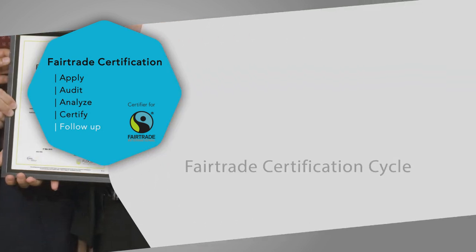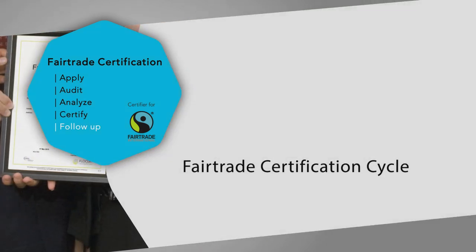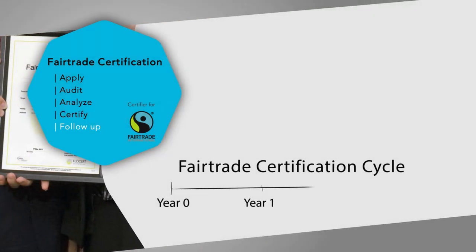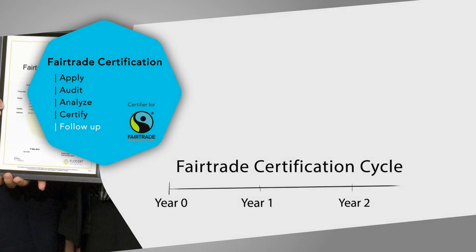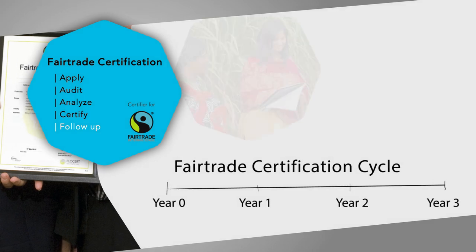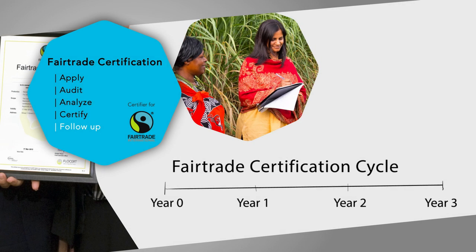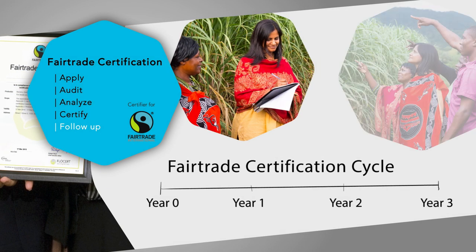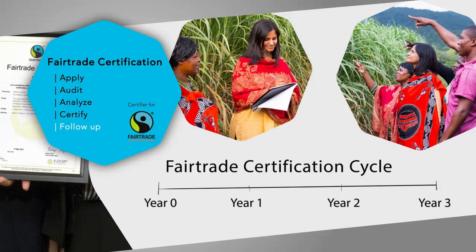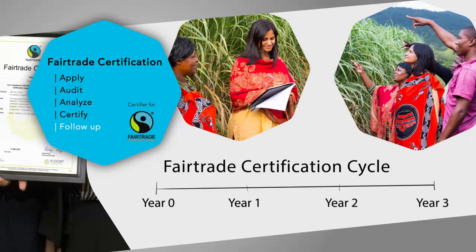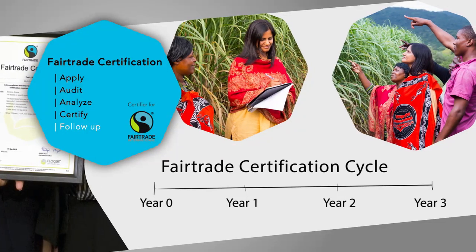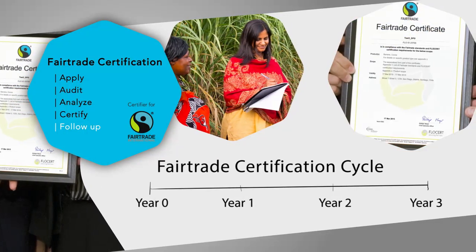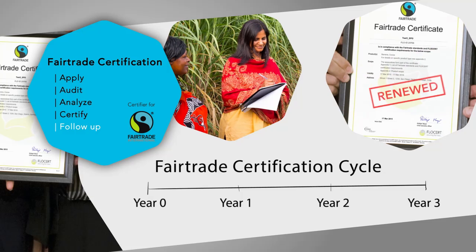Step 5: Follow-up. A FAIR Trade certification cycle lasts three years, during which we carry out at least one more audit. This ensures things are still running well. If they are, your certificate will be renewed.